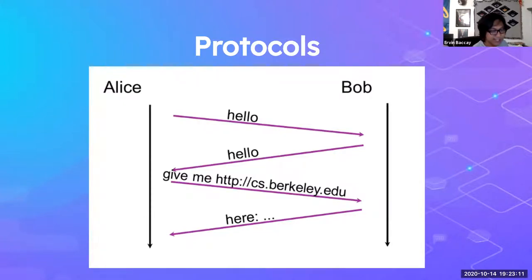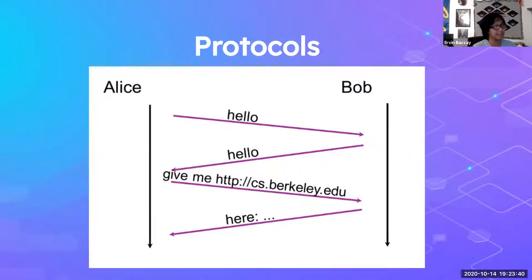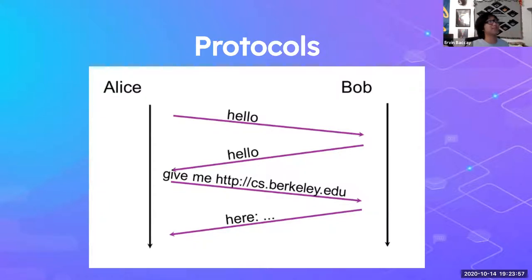Another issue: what if Alice sends hello and it fails? I'm on Comcast — a shitty ISP — so my hello might not actually make it to Bob. If Bob doesn't receive the initial hello, Bob can't say hello back, and then I can't send cs.berkeley.edu. This protocol has a single point of failure: if one step fails, the entire chain collapses. If Bob doesn't say hello back, it's like Bob ghosted Alice. This protocol simply won't work reliably.